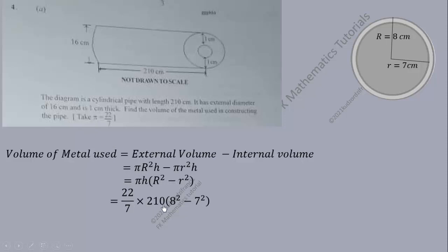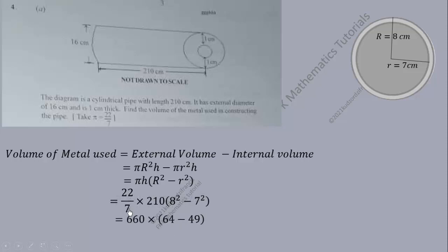We substitute: pi = 22/7, h = 210 for the length of the cylindrical pipe, big R = 8, small r = 7. So we have (22/7) × 210 × (64 − 49). That gives us 660 × 15 = 9900 cubic centimeters. So the volume of the metal used in constructing the pipe is 9900 cm³.